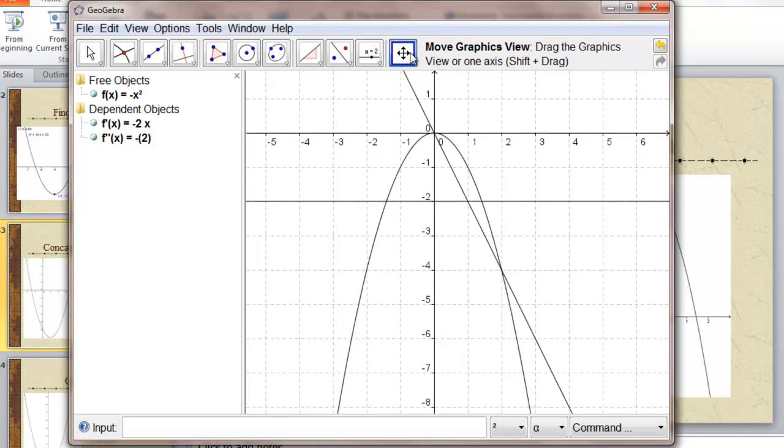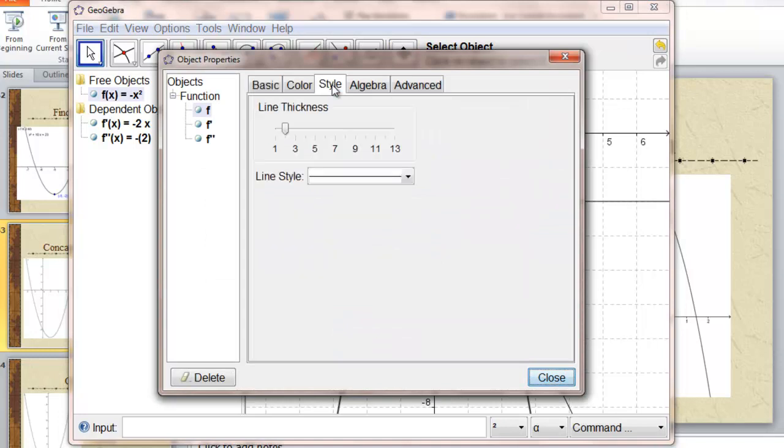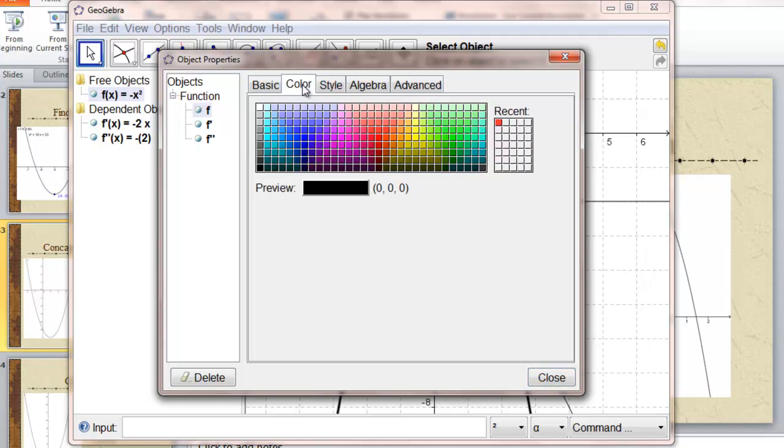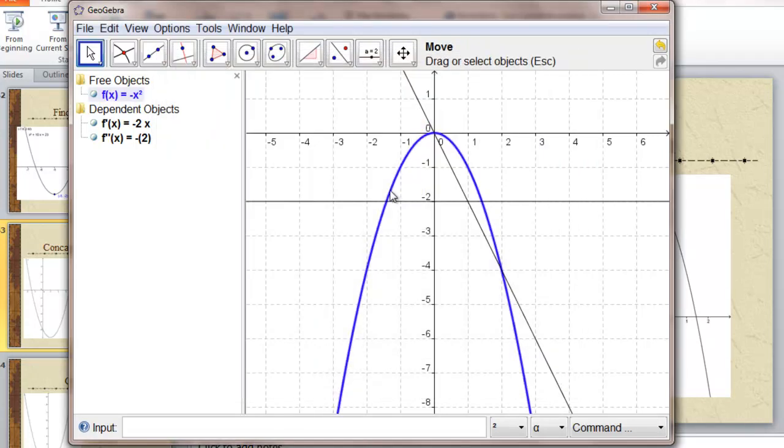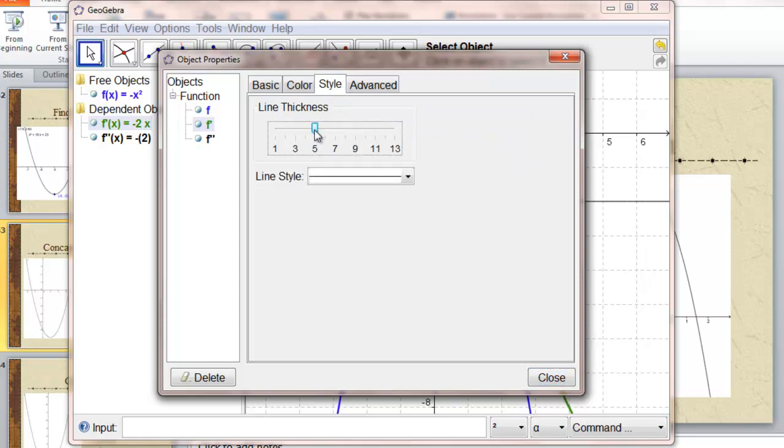So the original parabola will color blue. First derivative can be green. And the second derivative will make red.